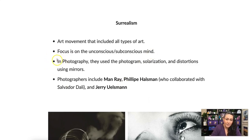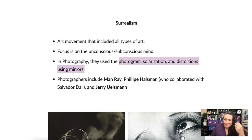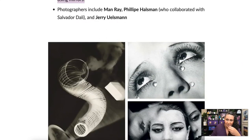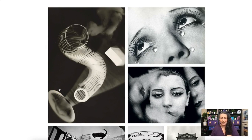In photography, there were some main photographers in the surrealism movement who used techniques like photograms, solarizations, and distortions — all film photography techniques. A photogram is where you basically lay objects on paper and then shoot light through it. You probably wouldn't be able to do something like this without a darkroom at home, but I want to give you an idea.